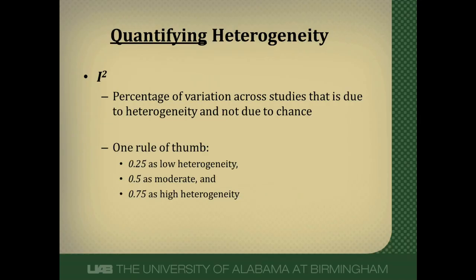What's more useful is actually quantifying heterogeneity. I-squared is a commonly used statistic for this — it's the percentage of variation across studies that is due to heterogeneity and not due to chance. I-squared can range from 0 to 100%. As rules of thumb: less than 25% suggests low heterogeneity, 50% is moderate, and 75% or greater is high heterogeneity. This gives you a sense of how much heterogeneity is present, not just whether it's present.